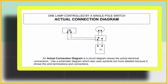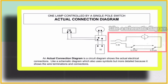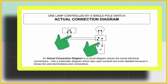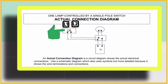The interpretation of the third diagram is one lamp controlled by a single pole switch. Actual connection diagram is a circuit diagram that shows the actual connections. Like a schematic diagram, it also uses symbols but is more detailed because it shows the wire terminations and connections. The diagram shows a simple circuit. A simple circuit has one bulb, one controller or switch, conductors, and a source.